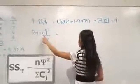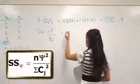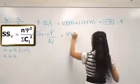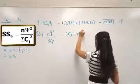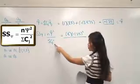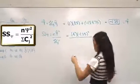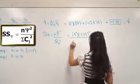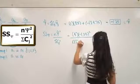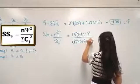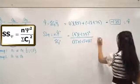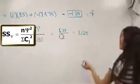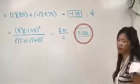So that psi value is a number we put into the sum-squared equation. N is the number of subjects per group, so I've got 4. Psi is minus 1.25, so it's minus 1.25 squared, divided by the sum of all my coefficients squared. My coefficients are 1, negative 1, and 0, so I have 1 squared plus negative 1 squared plus 0 squared. And I get a sum of squares of 3.125 for just this comparison.